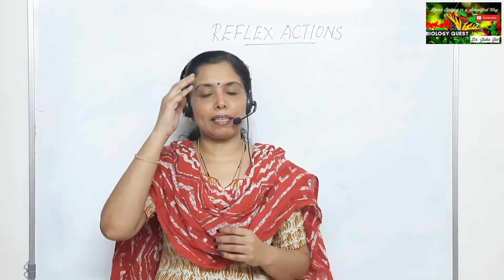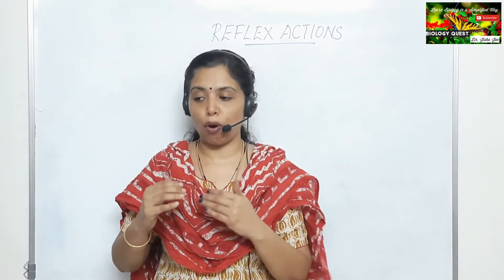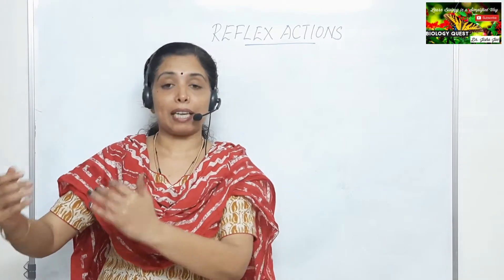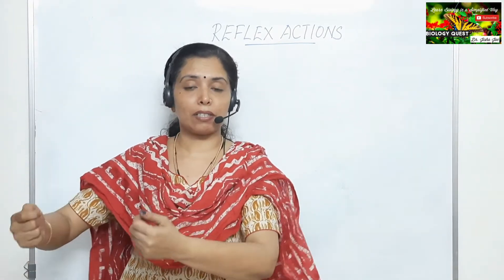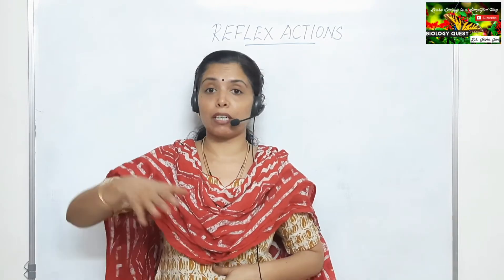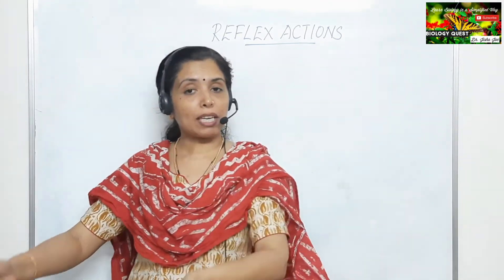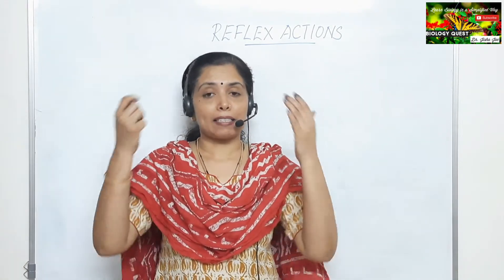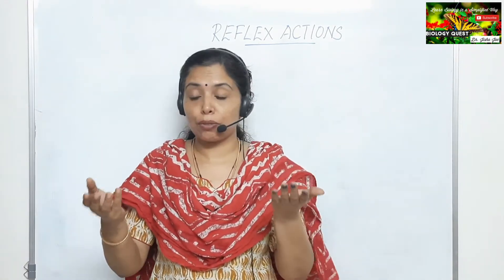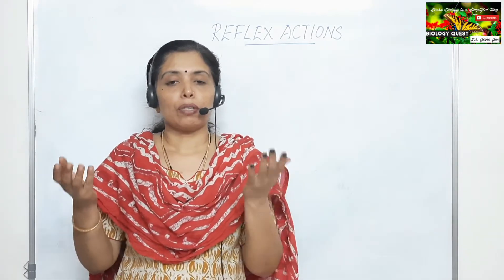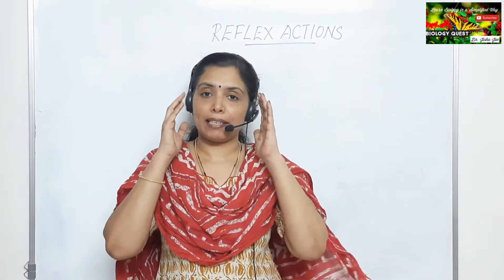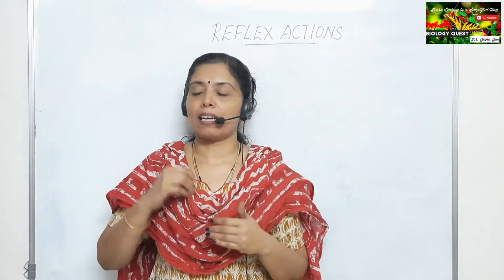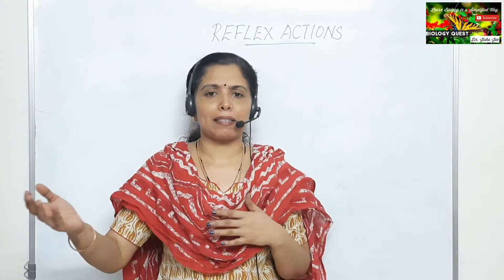For voluntary actions, it is the brain that decides whether to walk to the table, pick up the book, and read it. The muscles of the hands and legs work because the brain decides and commands them. So for voluntary action, the command originates in the brain.